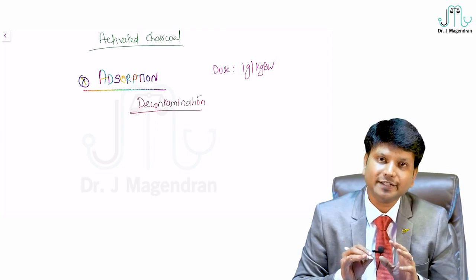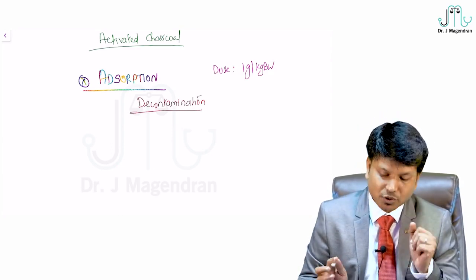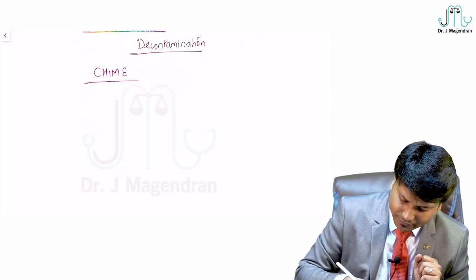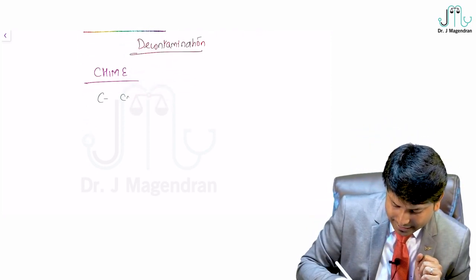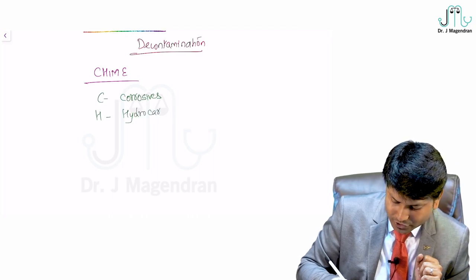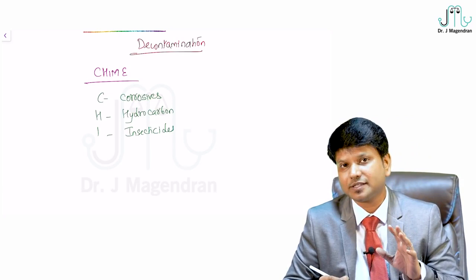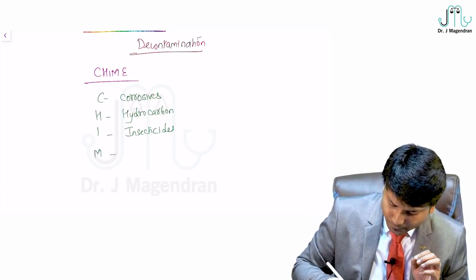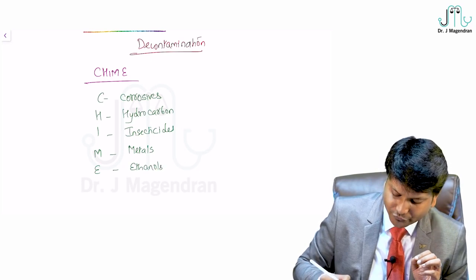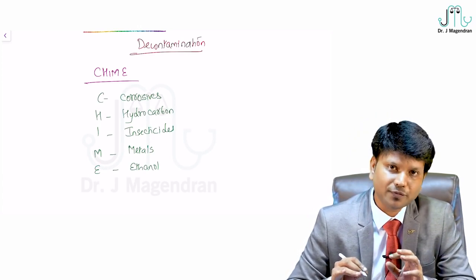Any poison that does not bind to activated charcoal — we cannot use it. The mnemonic is CHIME: C for Corrosives (acids and alkalis), H for Hydrocarbons, I for Insecticides (both OPC and carbamates), M for Metals, and E for Ethanol. These are the places where activated charcoal is not useful.